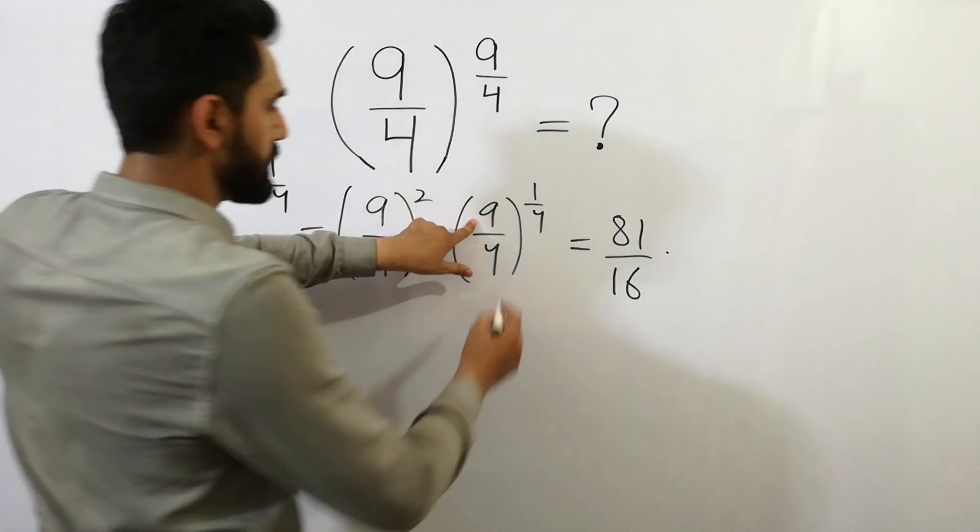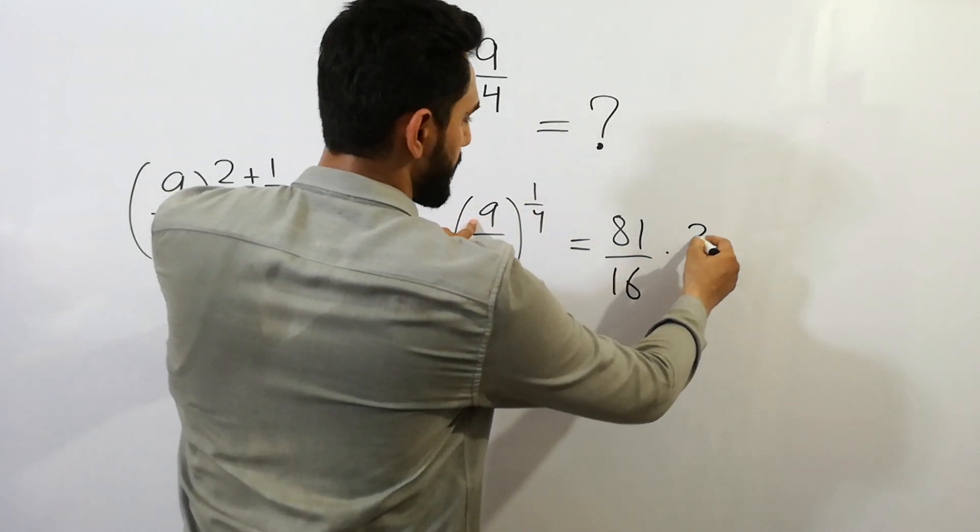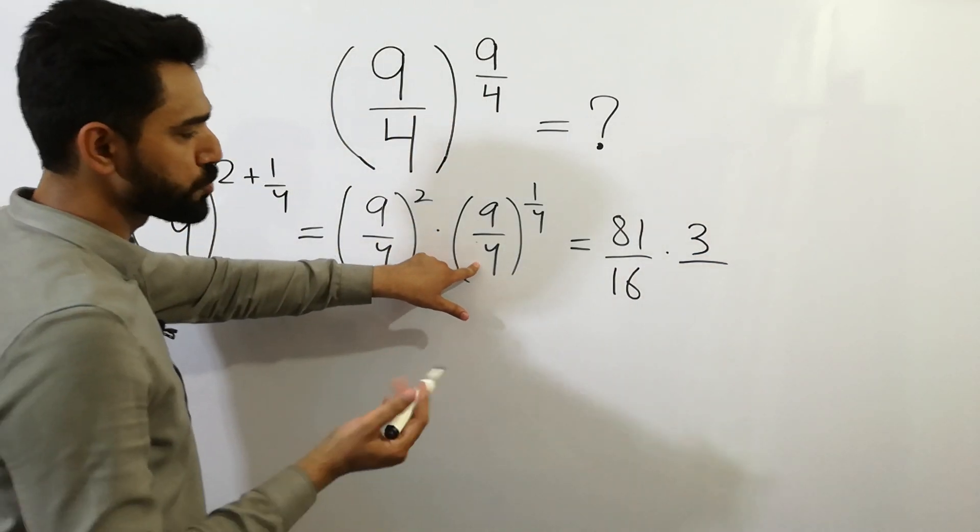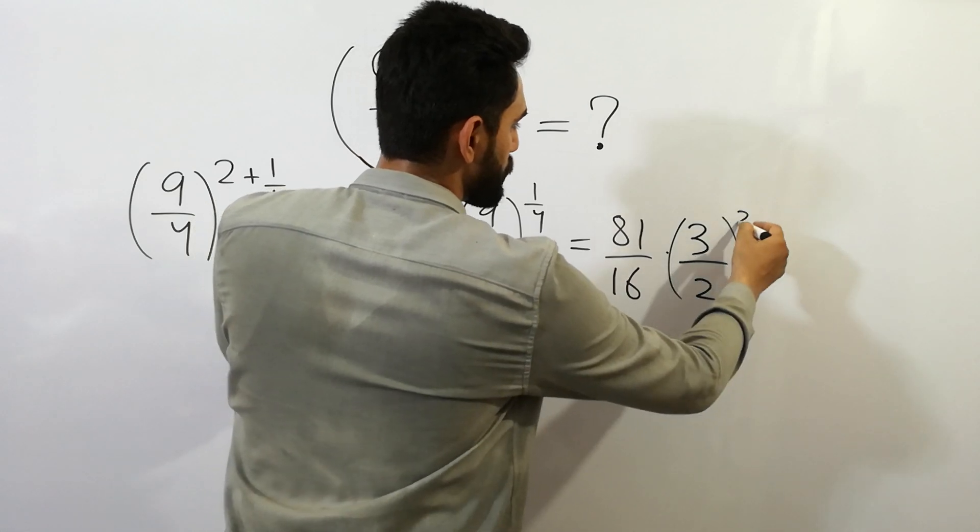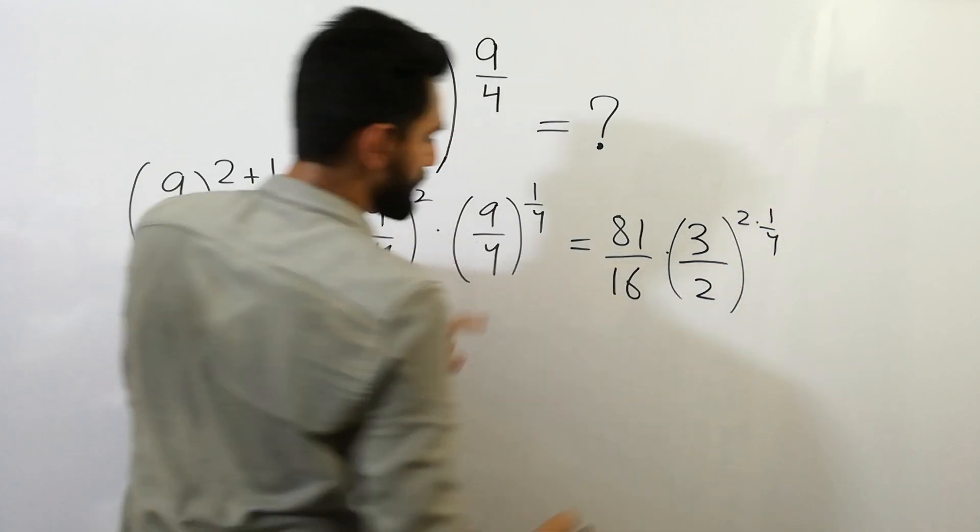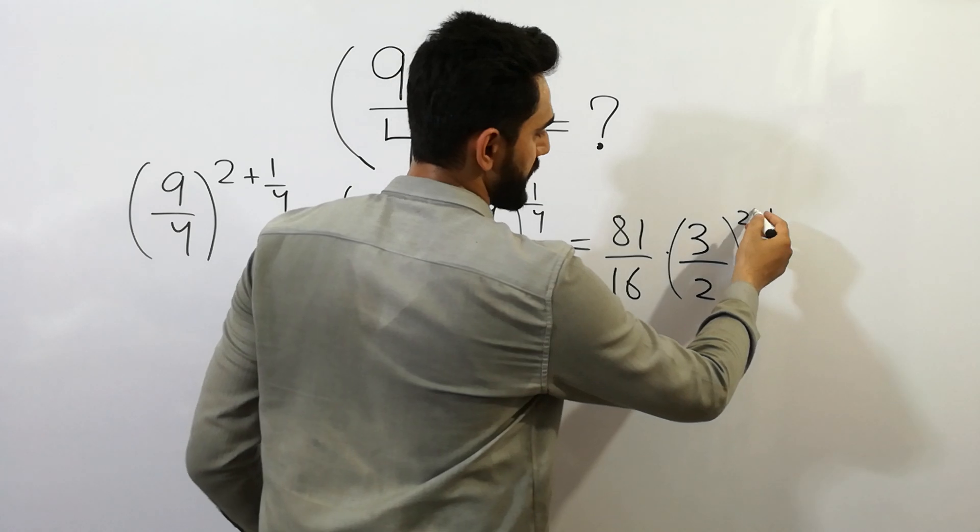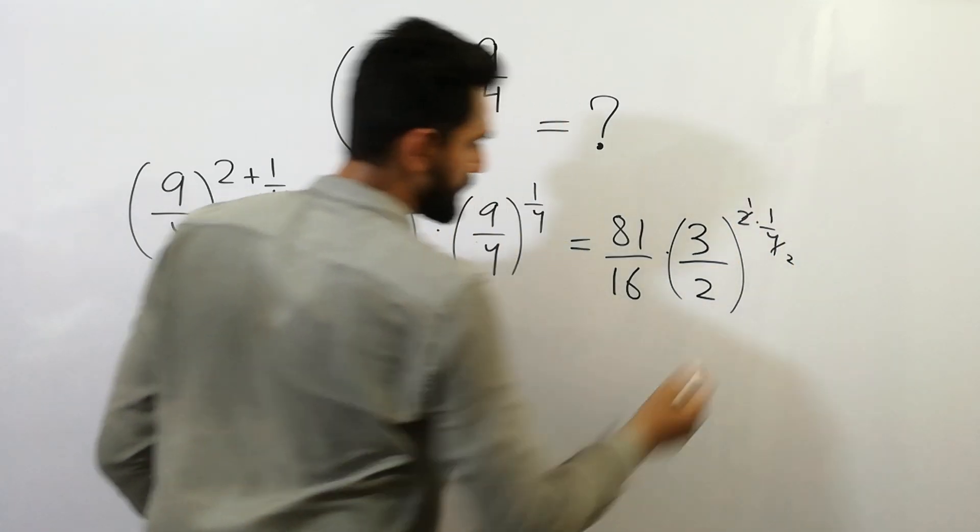this 9 is 3 squared, we can write 3, and 4 is 2 squared, we can write 2, bracket 2, 1 by 4. Clear? And we can simplify, we get 1 over 2.